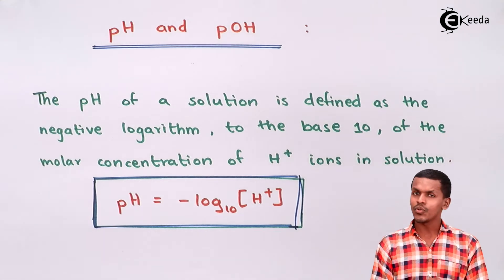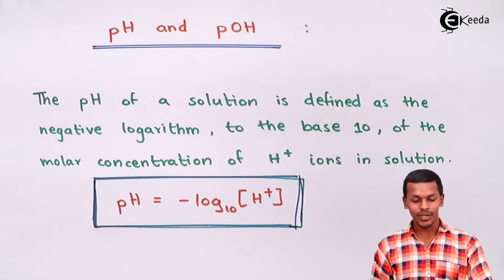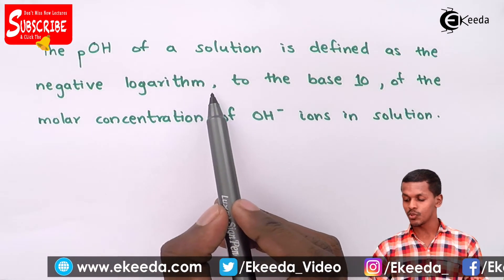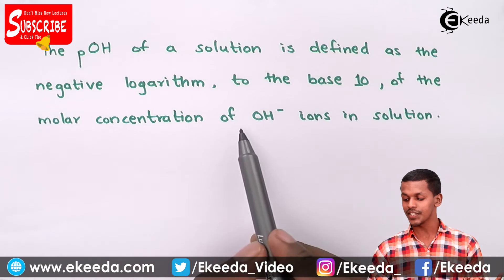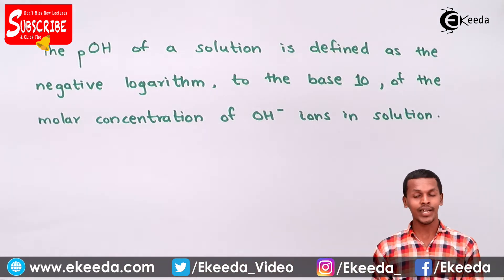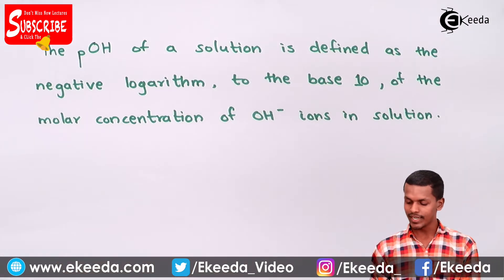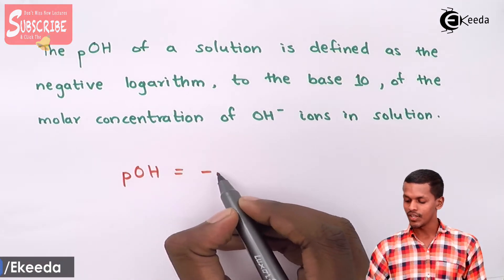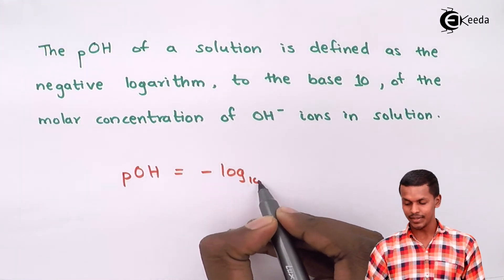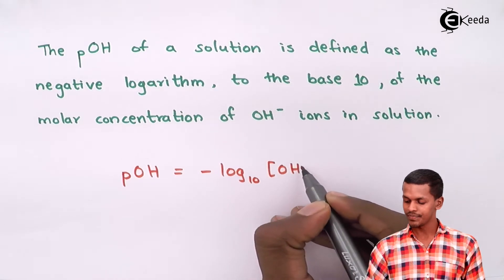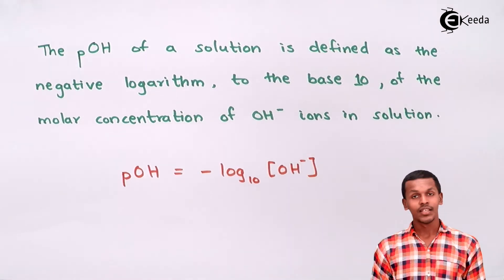Similarly, we can also talk about pOH. The pOH of a solution is defined as the negative logarithm to the base 10 of the molar concentration of OH⁻ ions in the solution. Mathematically: pOH = -log₁₀[OH⁻]. This is the mathematical expression for pOH.